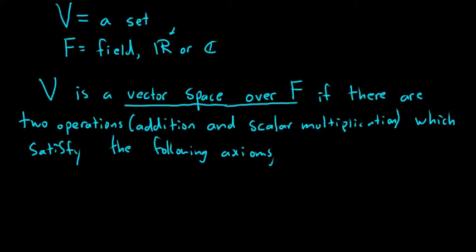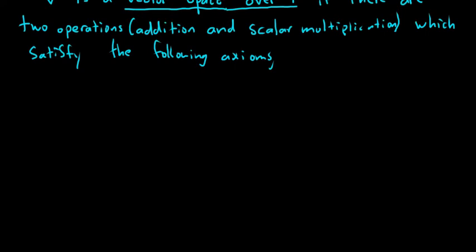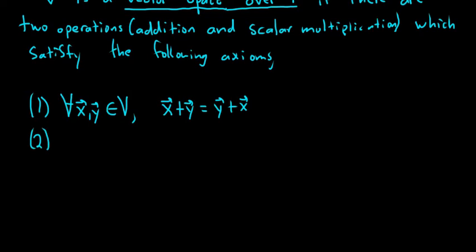So the following axioms. So I'll give them names. So I'll just number them. So one. Vector space axiom one. The first one is that the addition, the vector addition is commutative. So for all vectors, this means for all. For all x, y, and v, we have that the addition is commutative. So x plus y is equal to the vector y plus x.